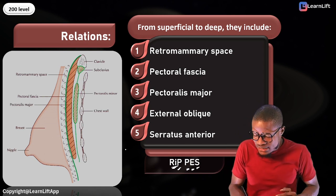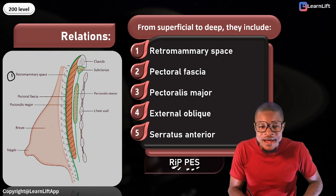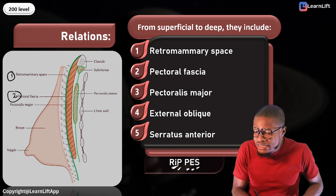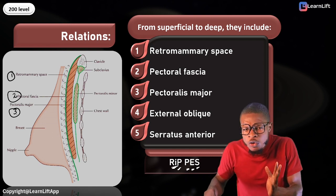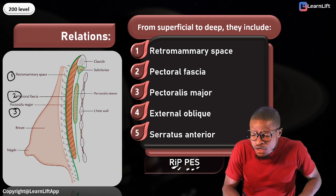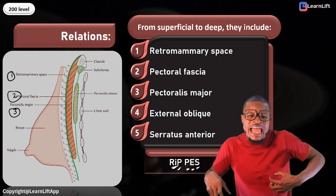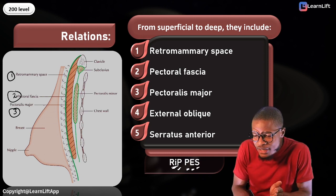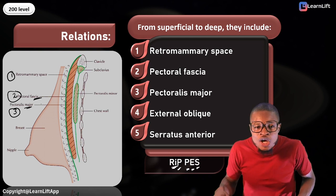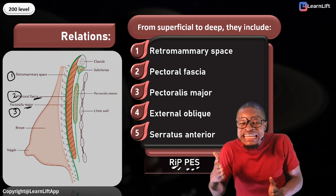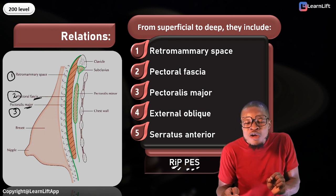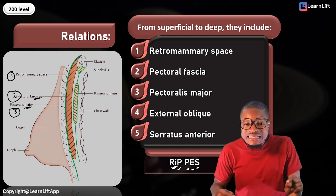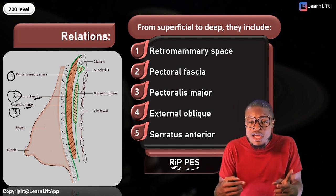Let me show this on the diagram. Here you can see the retromammary space. The pectoral fascia is here, and this third one is the pectoralis major. What separates the retromammary space from the pectoralis major is the pectoral fascia — note it is called pectoral fascia, not pectoralis fascia. Pectoralis major, external oblique, and serratus anterior are all muscles — so there are three muscles, one fascia, and one space.